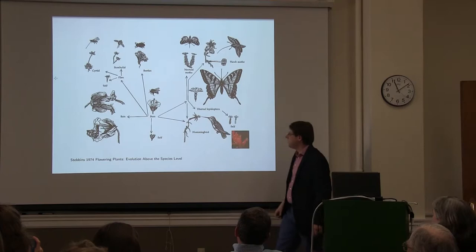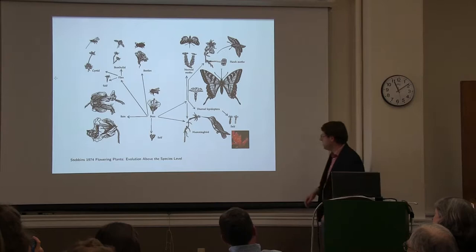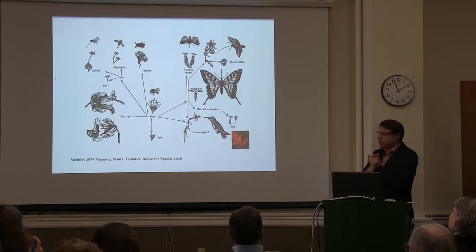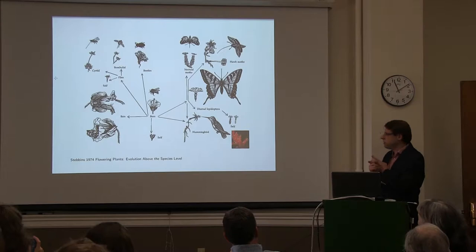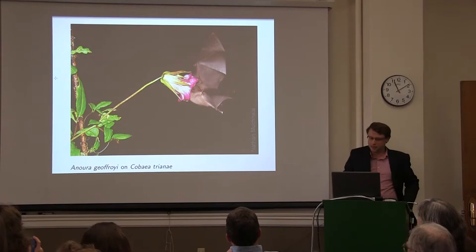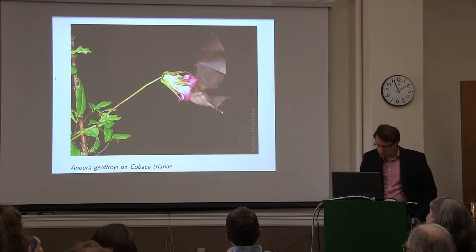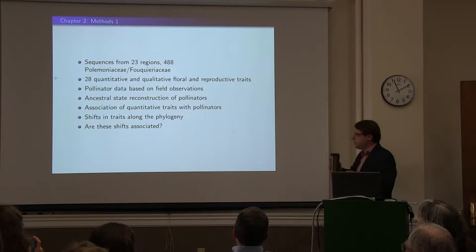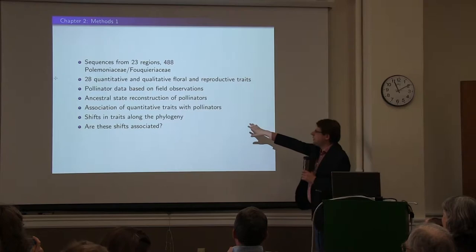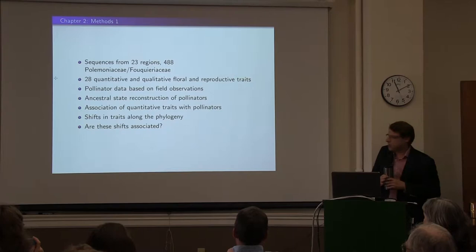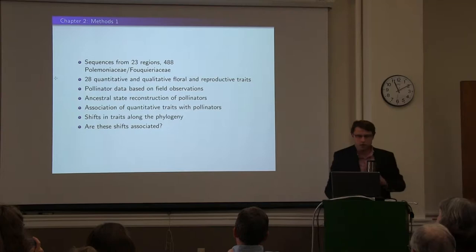One thing we didn't know at that point was that Polemoniaceae is sister to the Codonaceae family, which is mostly hummingbird pollinated. So one question is: how does our new knowledge about relationships based on molecular data, combined with knowledge of outgroups, change our interpretation of the evolution of pollination systems? We've got sequences for 23 regions for 488 taxa, 28 quantitative and qualitative floral traits, and pollinator data based on field observations. Using these data, we did an ancestral state reconstruction of pollinator type, tested the association of quantitative traits with pollinators, looked for shifts in trait values along the phylogeny, and asked if these shifts in pollinators are associated with shifts in traits.